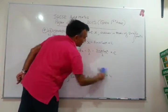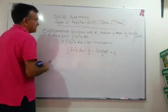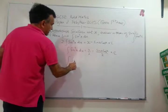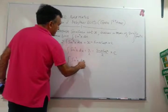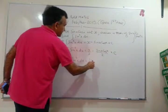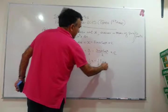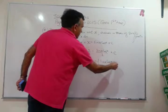So, that's it. We are done with the problem. I want to rewrite my answer as: the integral of sine squared x dx will be equal to one-half x minus one-half sine x cos x plus c.